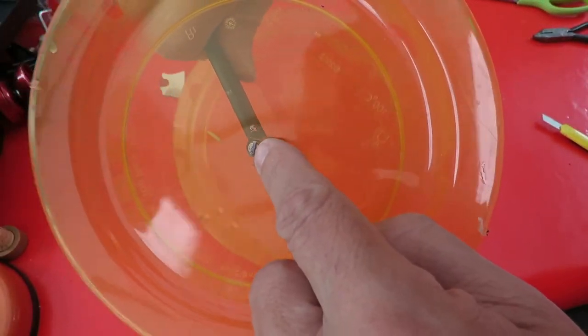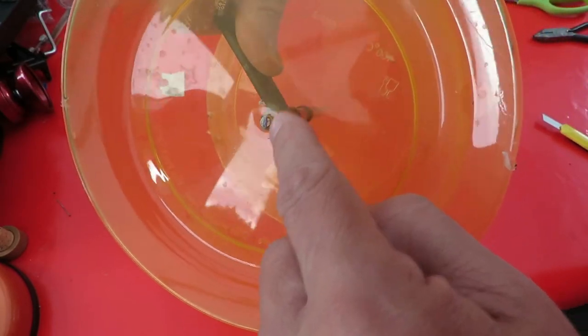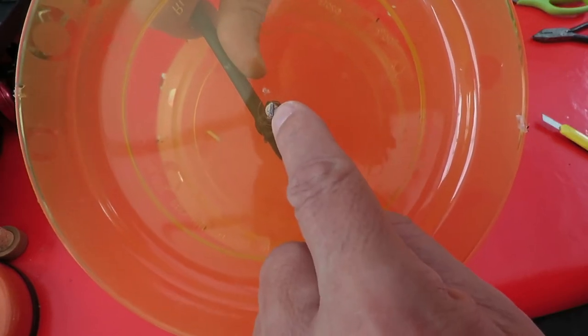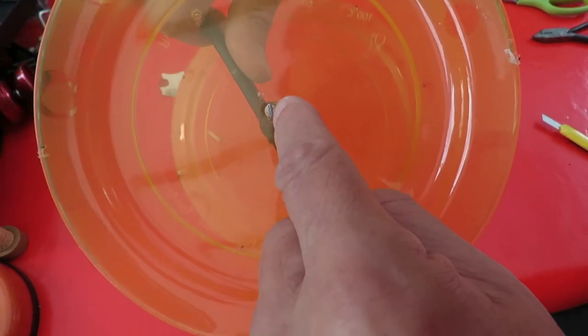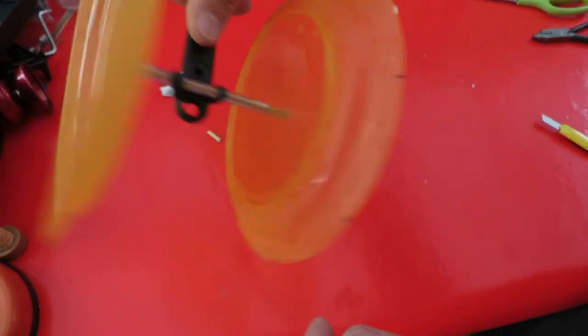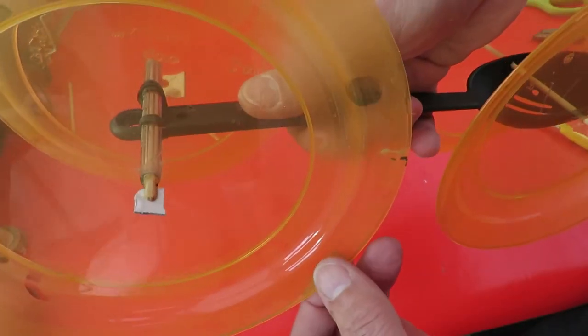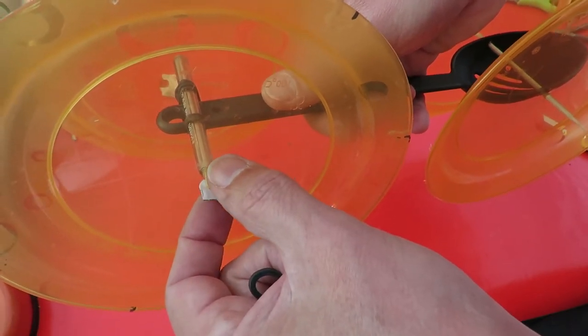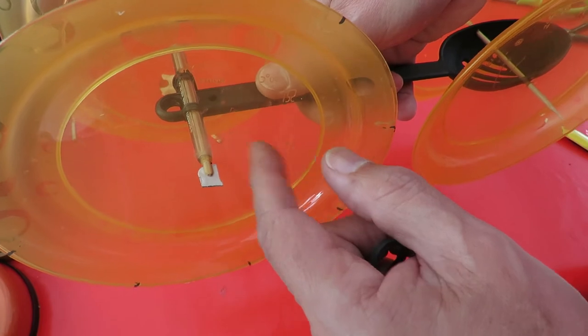To make the axles a tighter fit in the holes on those wheels because they were a little bit too big, I've split them with a knife and just jammed a thin piece of card in there. You can see it easier on this side because I haven't trimmed it yet, but that's splitting the bamboo apart so it's going to grip the inside of the wheel.